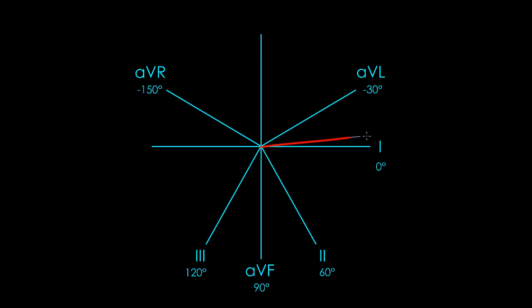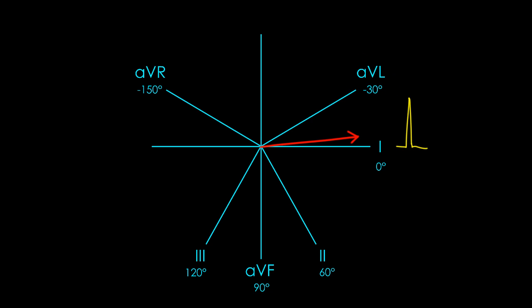Let's say this arrow represents our mean QRS axis. If we looked in lead 1, we would see a positive QRS complex because the axis is moving towards lead 1. In lead AVL, because the axis is generally moving towards it, we'd still get a positive QRS complex — but a little bit less positive, since the axis isn't oriented exactly towards AVL. So our QRS complex might look shorter, or it might show a positive and negative deflection where the negative partially cancels the positive, giving a net result that's less positive than in lead 1.